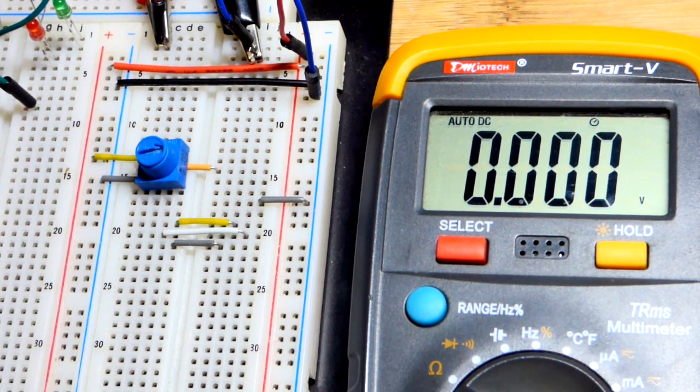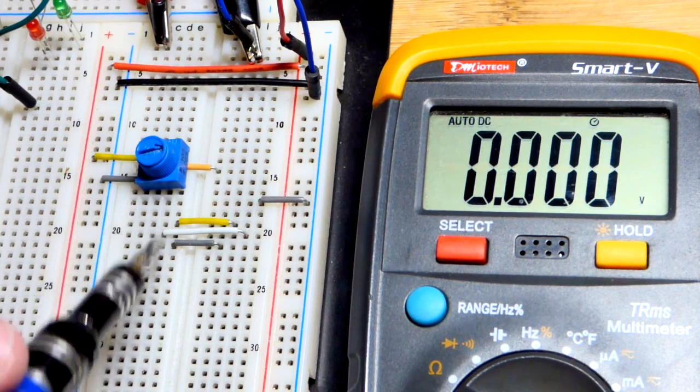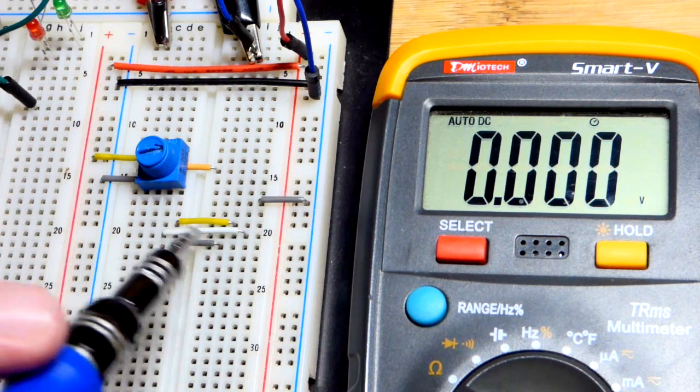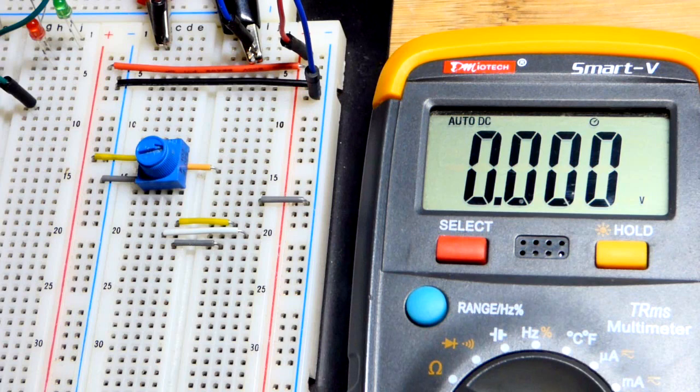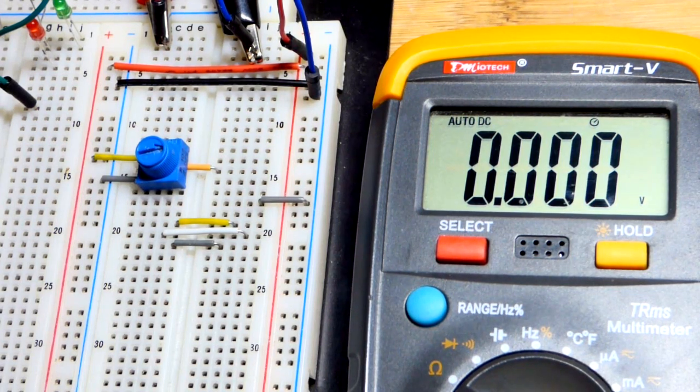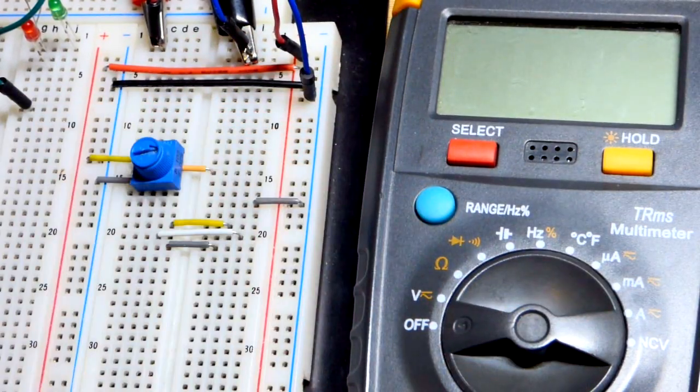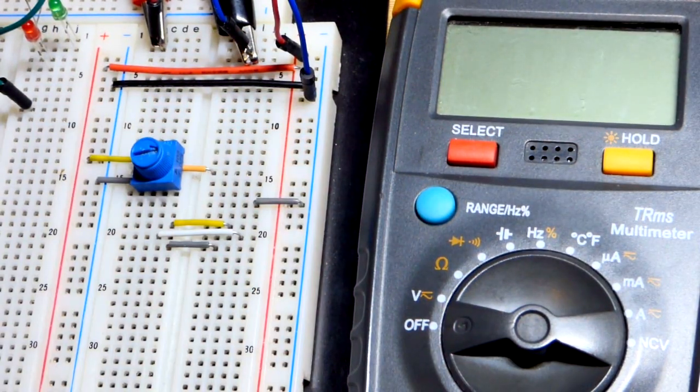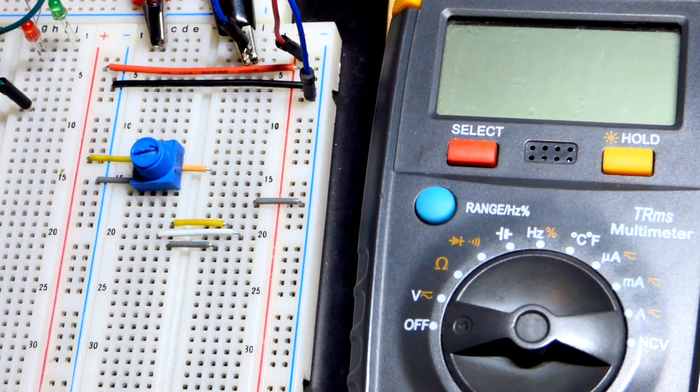That's really about all there is to using the trim pot as a variable voltage divider, or you can just use it as a variable resistor. Just get rid of one of these jumpers and wire it up where it is a resistor on one end or the other. Make sure you turn off the multimeter when you're done. I'm going to pop up some other videos. Make sure you check those out, click subscribe, like the bell. I will see you in the next video. Thank you.